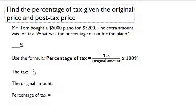So the tax has to be $5,200 minus $5,000, which is going to be $200.